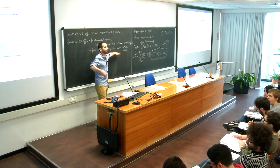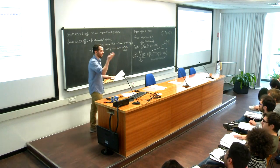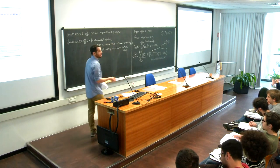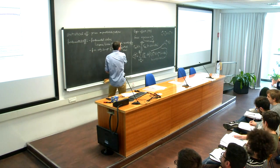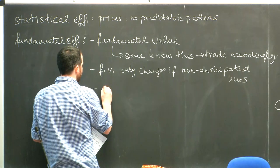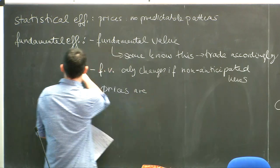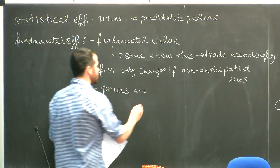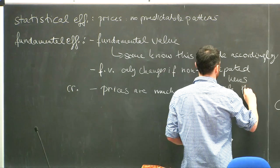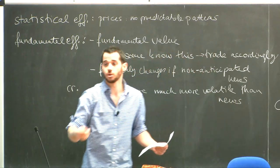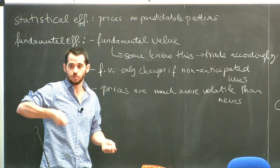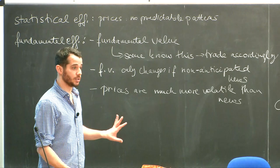Actually you can falsify fundamental efficiency: real news doesn't happen that often. A key critique is that prices are much more volatile than news. The question of what unanticipated news is and how often really big news happens - maybe once a day - but if you look at the volatility of prices, on super short scales they are moving, and it doesn't feel like a very good explanation.